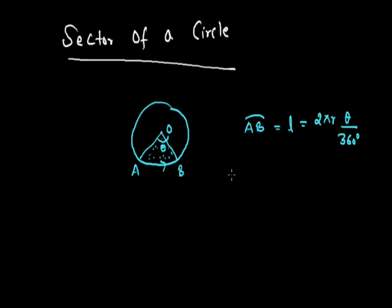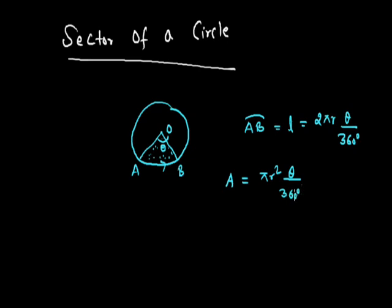Now, area of this sector. The total area of the circle is πr². We are finding this area for angle theta, so the area of this sector will be πr²θ upon 360 degrees.